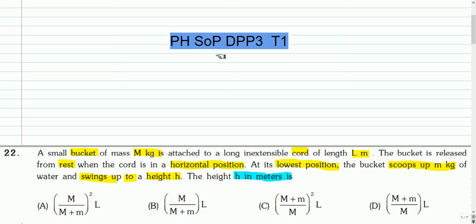In this video, I will discuss some system of particles problems. This is the first question. A small bucket of mass m kg is attached to a long inextensible cord of length L meters. The bucket is released from rest when the cord is in a horizontal position. At its lowest position, the bucket scoops up m kg of water and springs up to a height h.